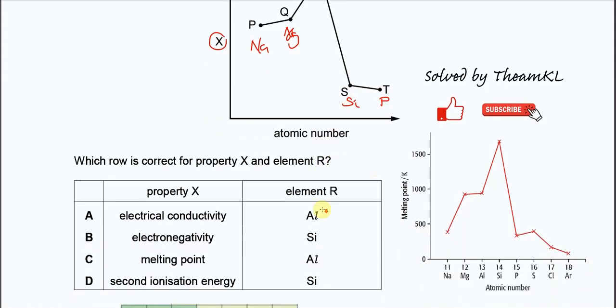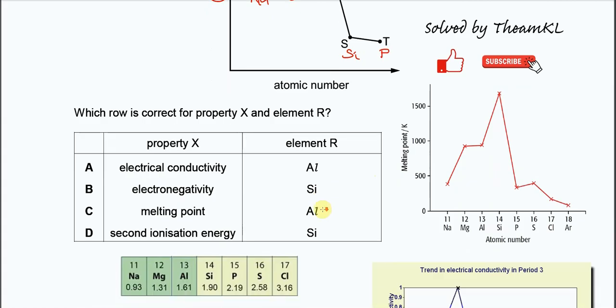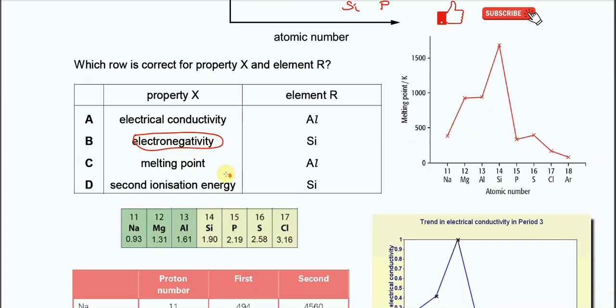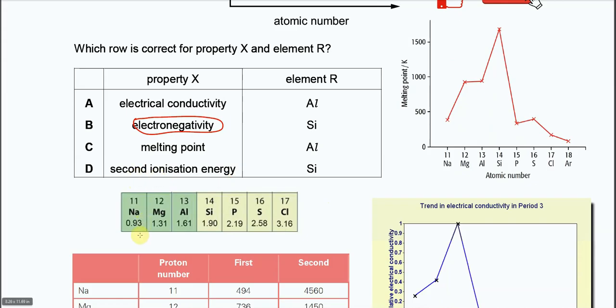If property X is electronegativity, you have to understand when across the period from P, Q, R, S, T, the electronegativity increases. For example, sodium is 0.93, then magnesium is higher at 1.31.